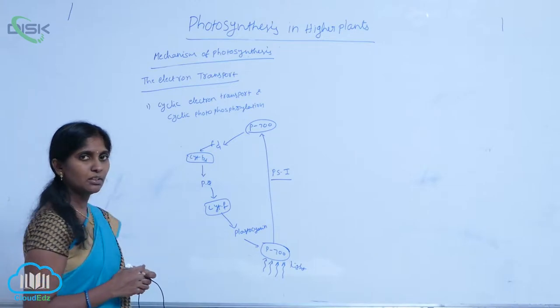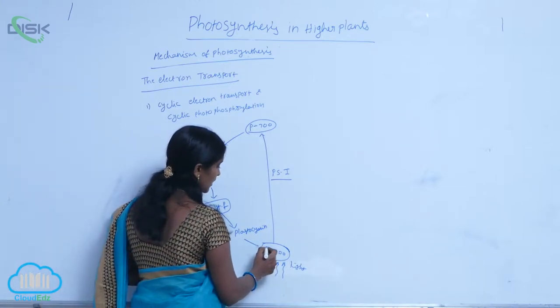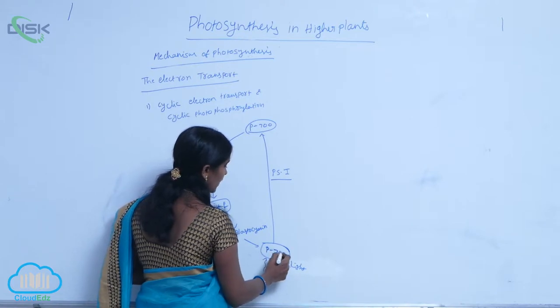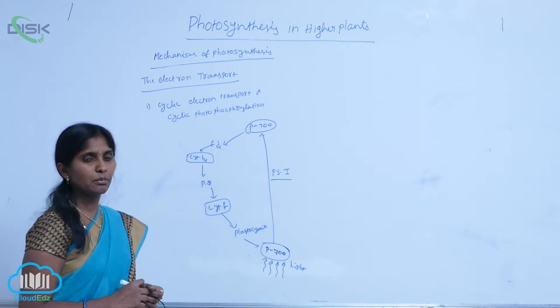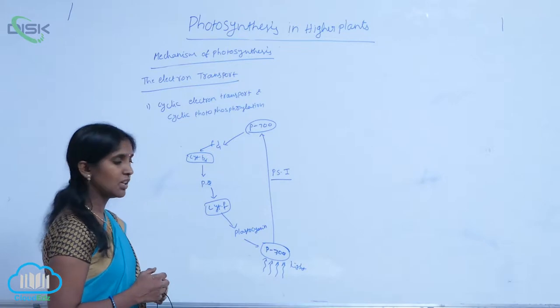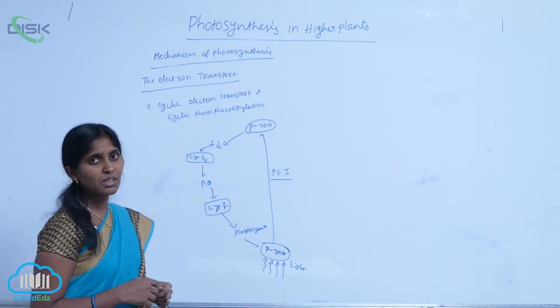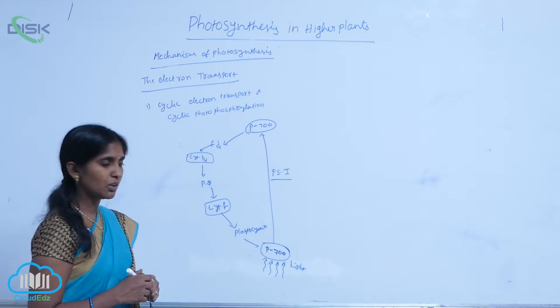In PS1, the active center or reaction center is P700, where chlorophyll A is present. The antenna pigments absorb the light and transfer it to P700. P700 gets excited by receiving photon molecules.